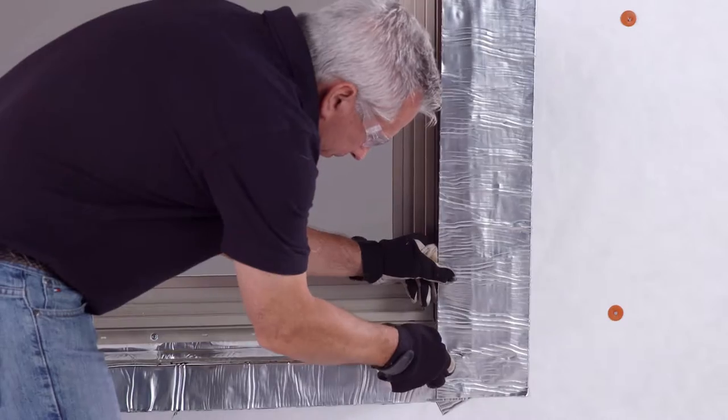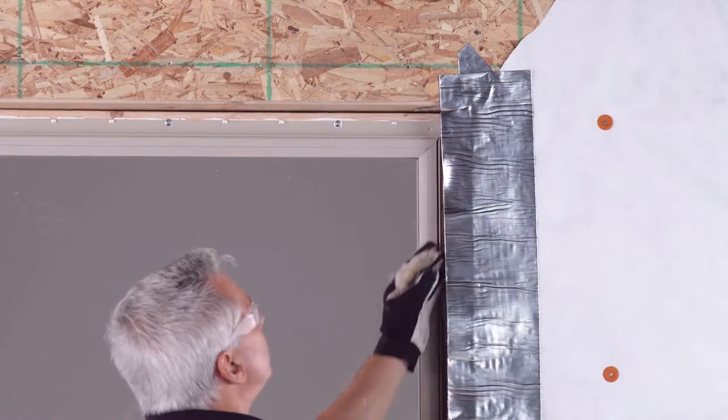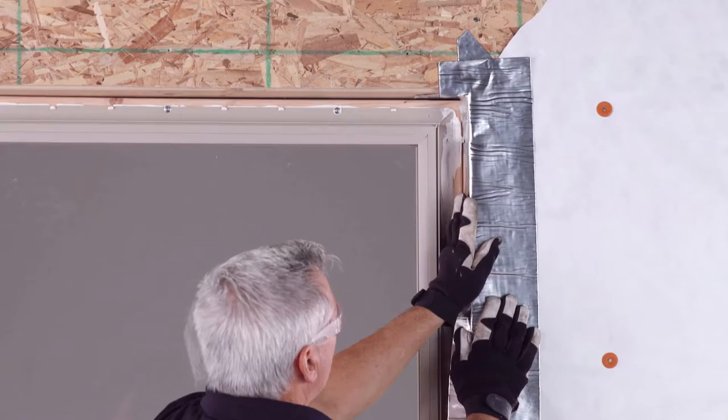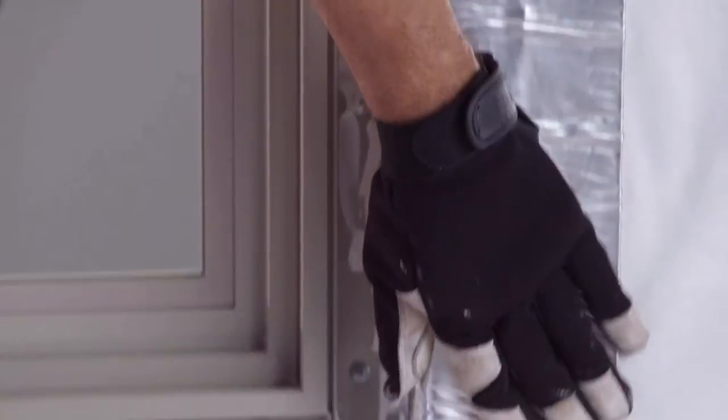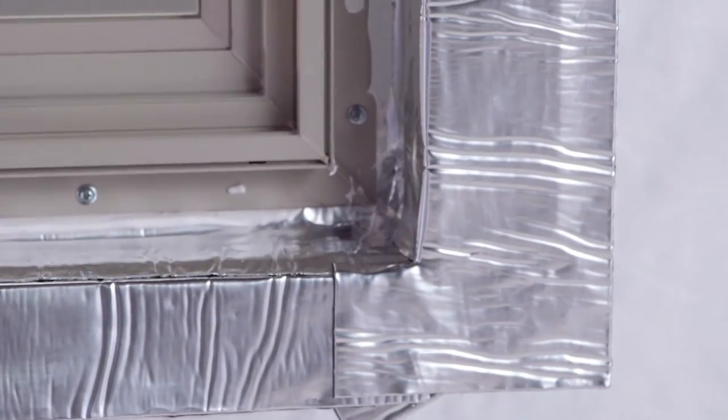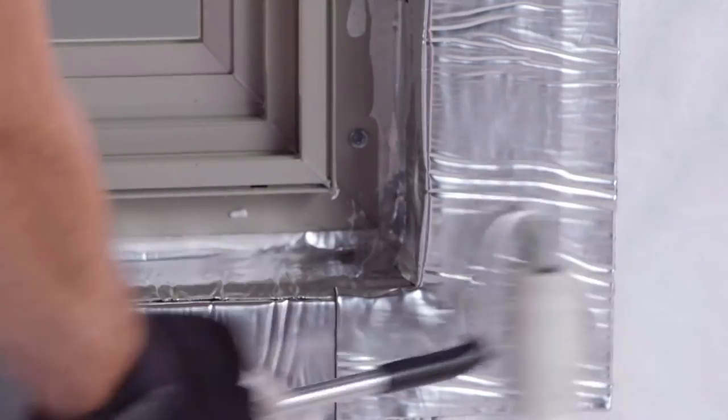Make two relief cuts at the sill and head corners. Fold the remaining flashing tape into the opening over the primary jams. Then use the J-Roller to remove any air pockets.